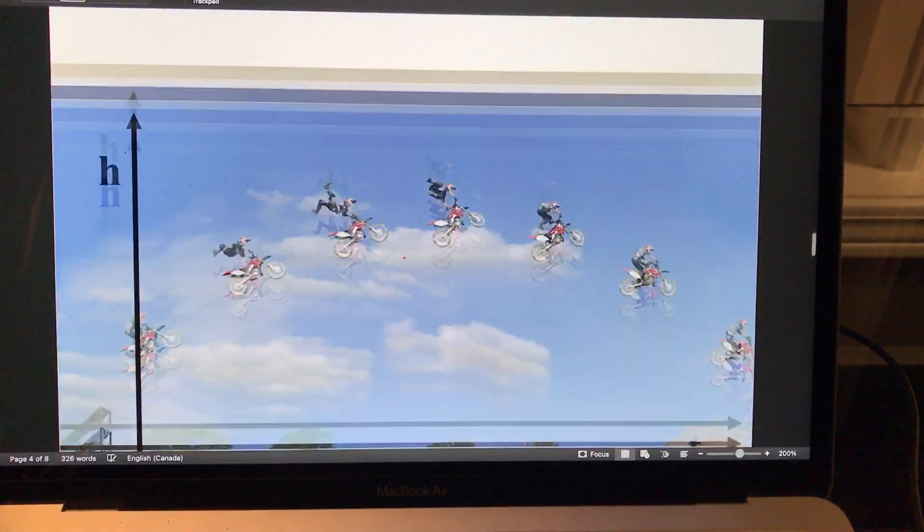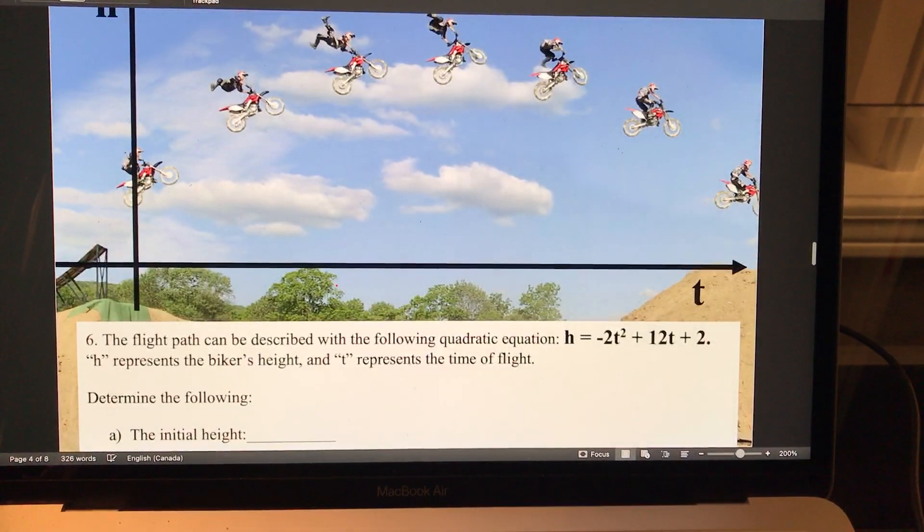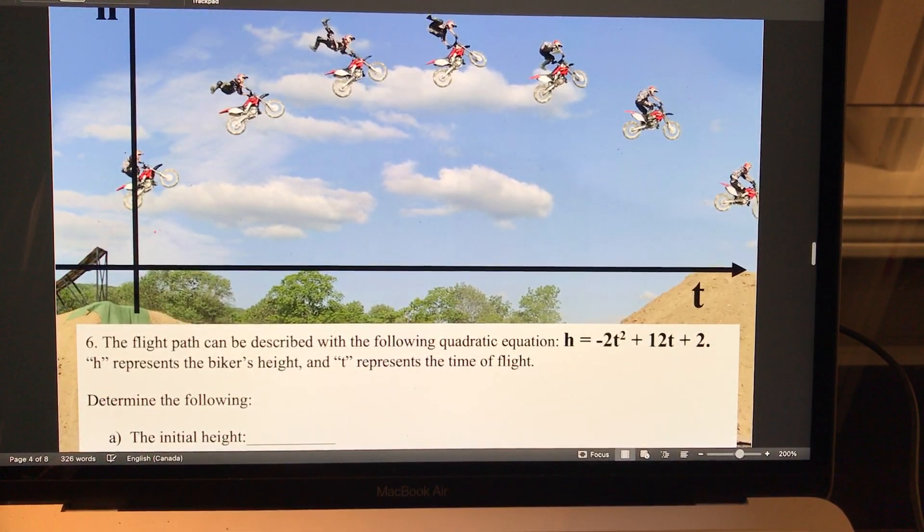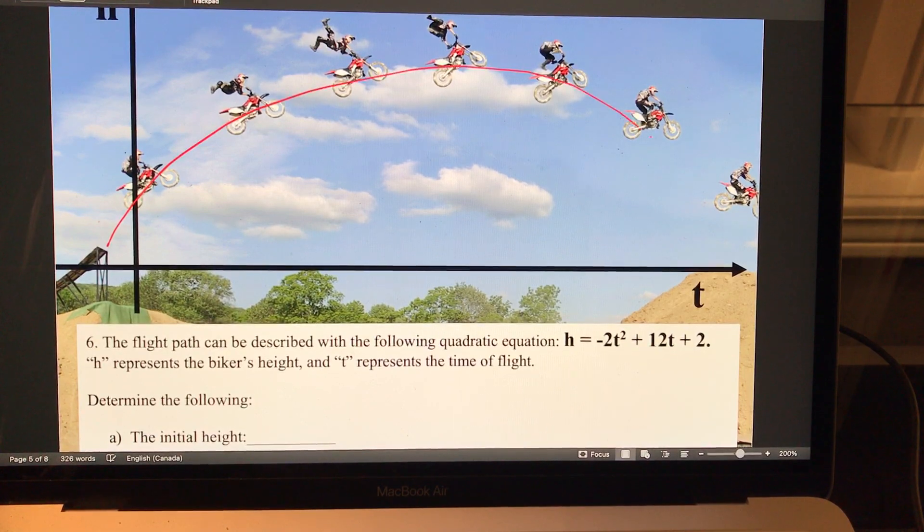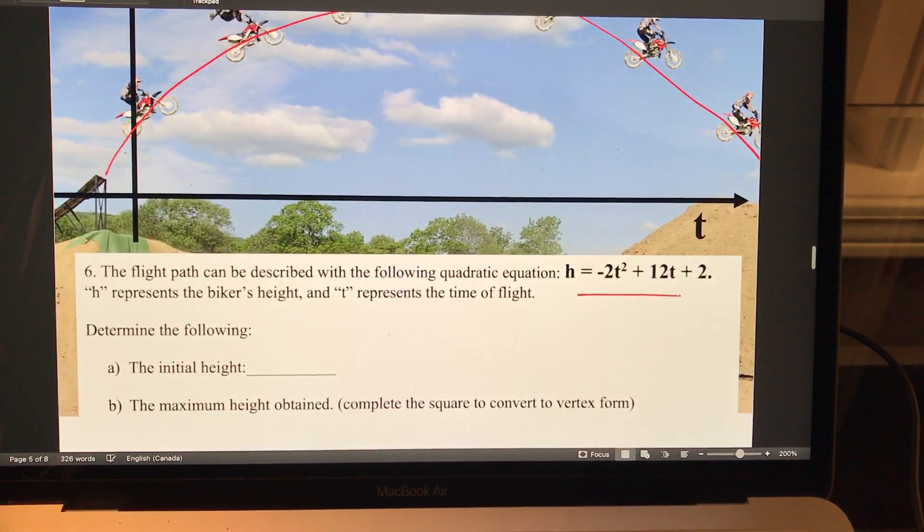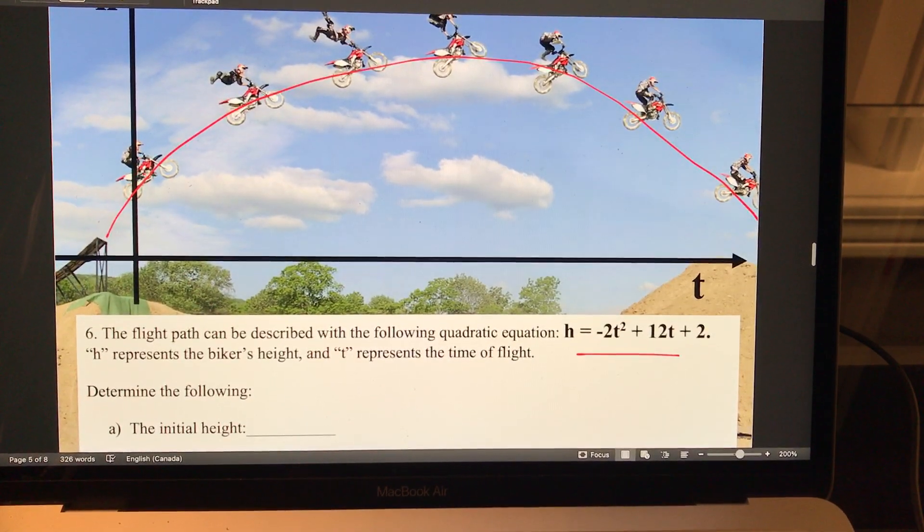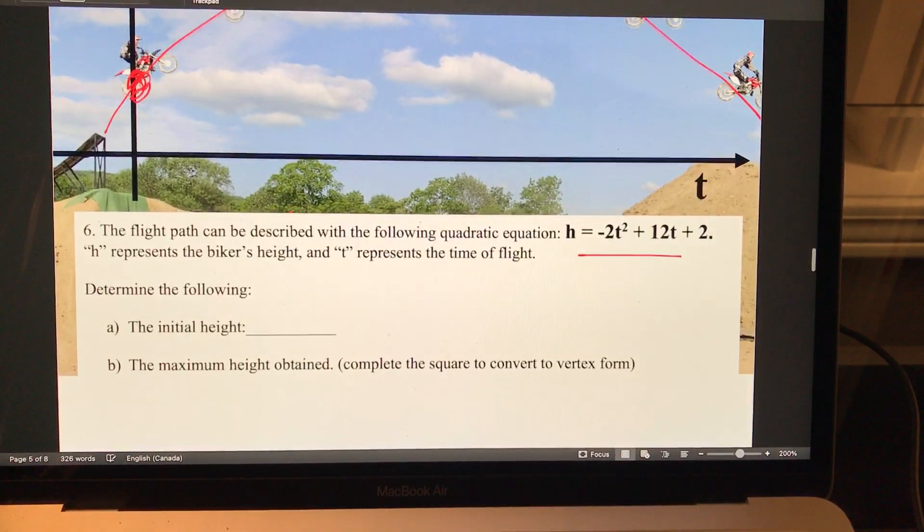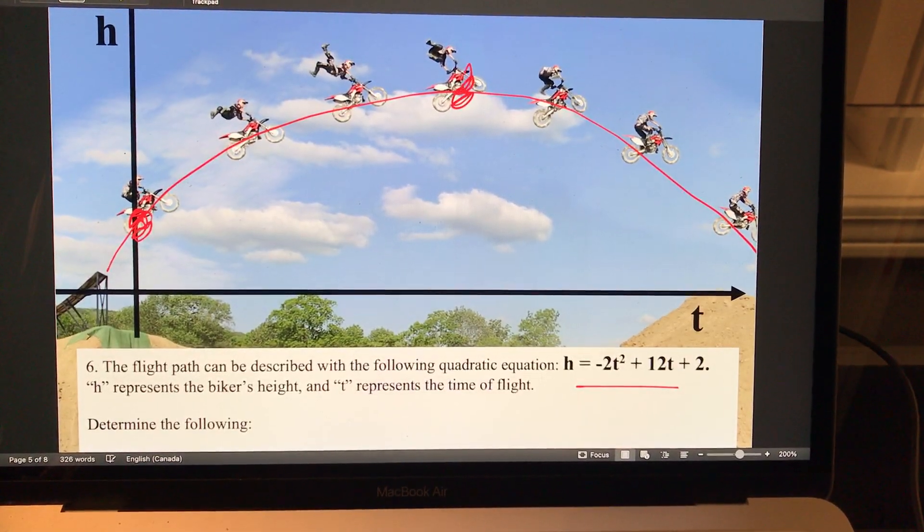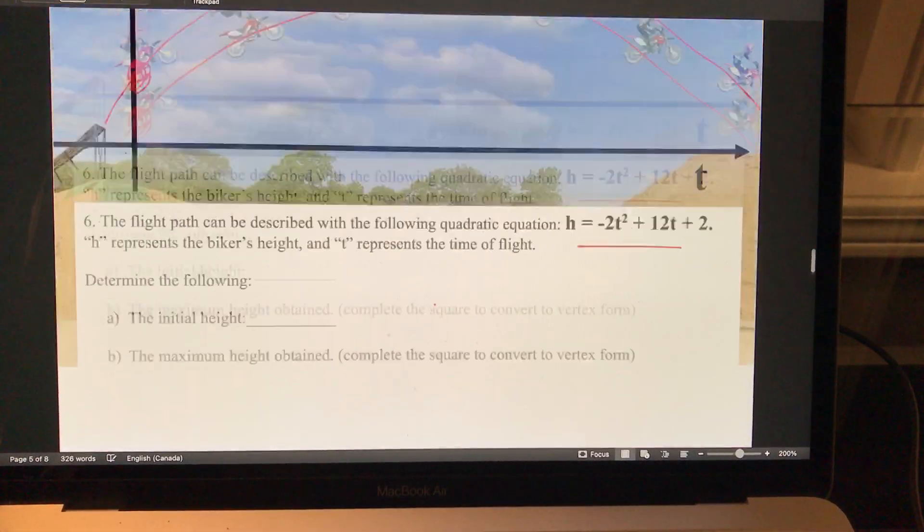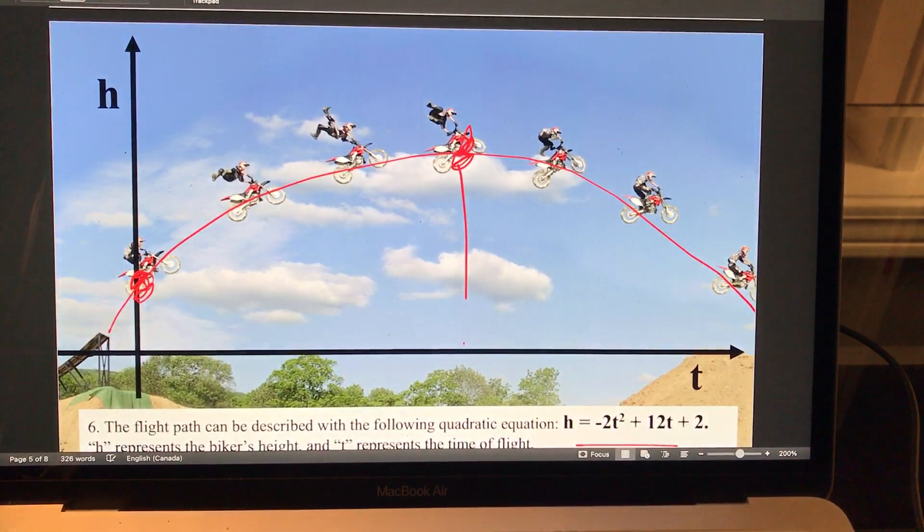Here's the flight, the path of an object, a projectile flying through the air. Here's the equation that describes it. Some standard questions: a is the initial height which is over here, b is the maximum height which is up here, c is the time it takes to get to that height.